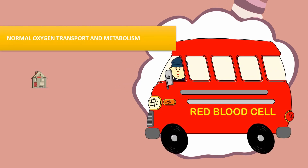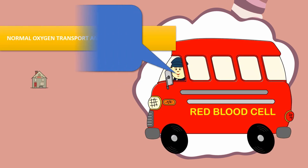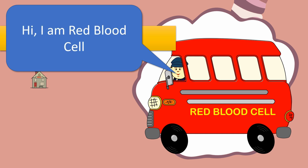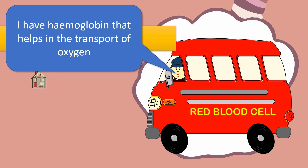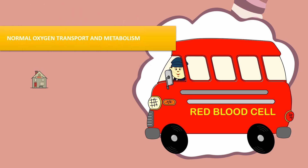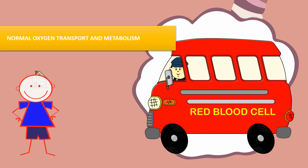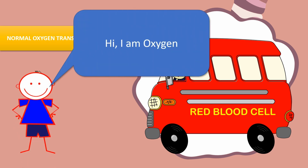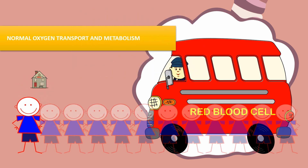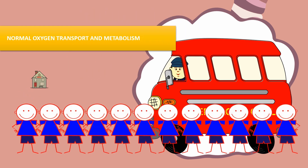The inspired air containing 21 percent oxygen will diffuse through the thin single-layer wall of the alveoli and the capillaries lining the alveolar wall. The oxygen will then bind with the hemoglobin in the red blood cells and will be transported to the cells to be used for metabolism.